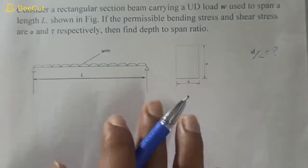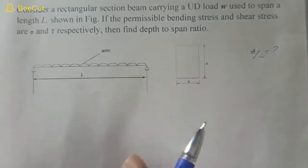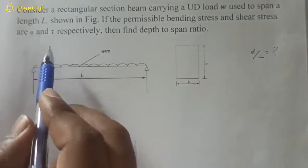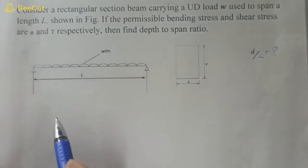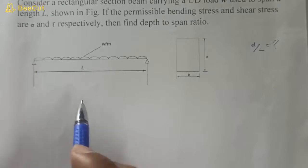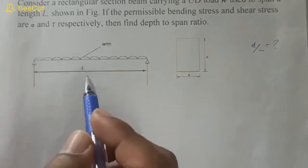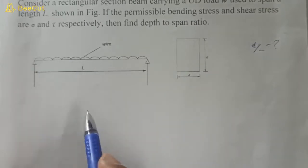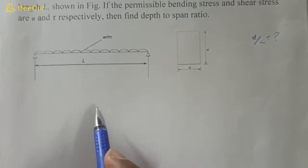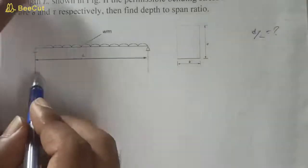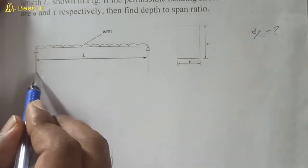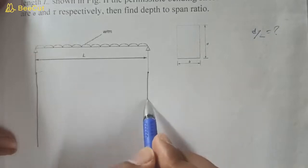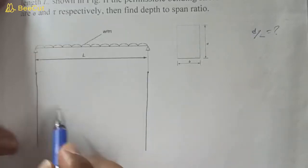We are given sigma and tau. First we have to find the maximum shear force and maximum bending moment across this beam. Let's draw the bending moment and shear force diagram.